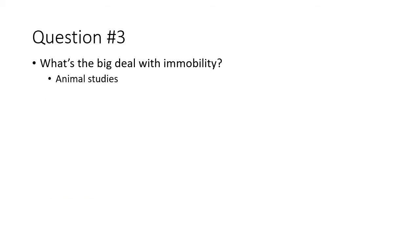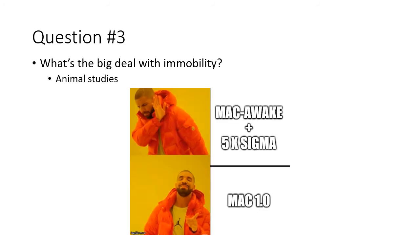Why is the concentration causing immobility the reference point that we use? Why not unconsciousness? The answer is that the concept of MAC was coined following experiments performed by Ted Eger and his colleagues on dogs, in whom unconsciousness and amnesia are much more difficult to discern. However, for some reason we all seem to run patients at 1.0 MAC no matter the circumstances. The point is that there is no reason why we should do this — the risk of awareness in a patient at 0.8 MAC is negligible.